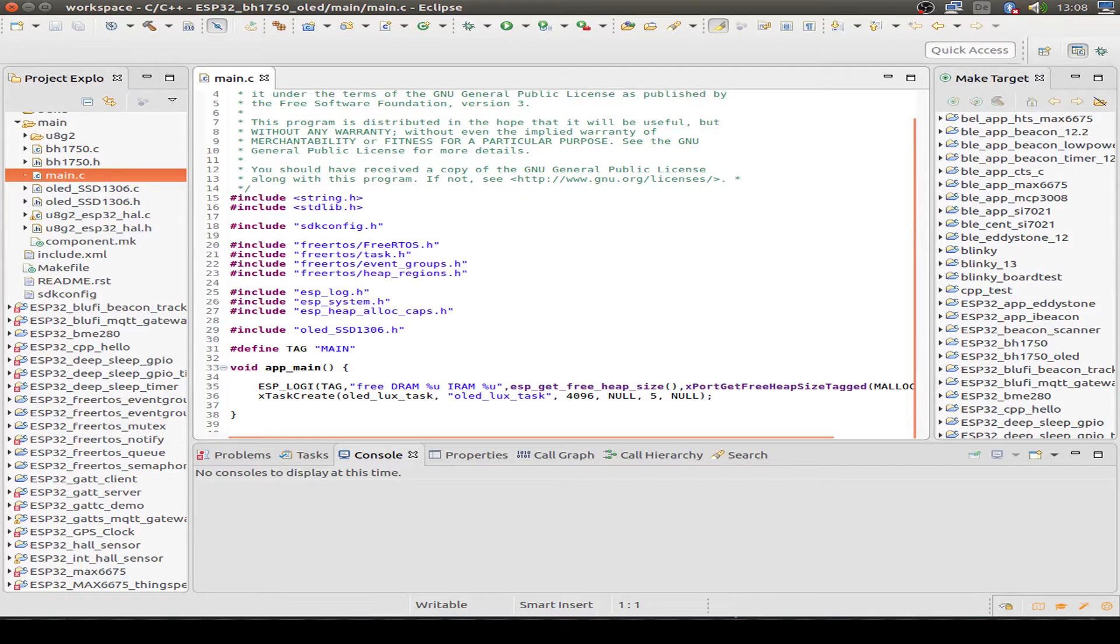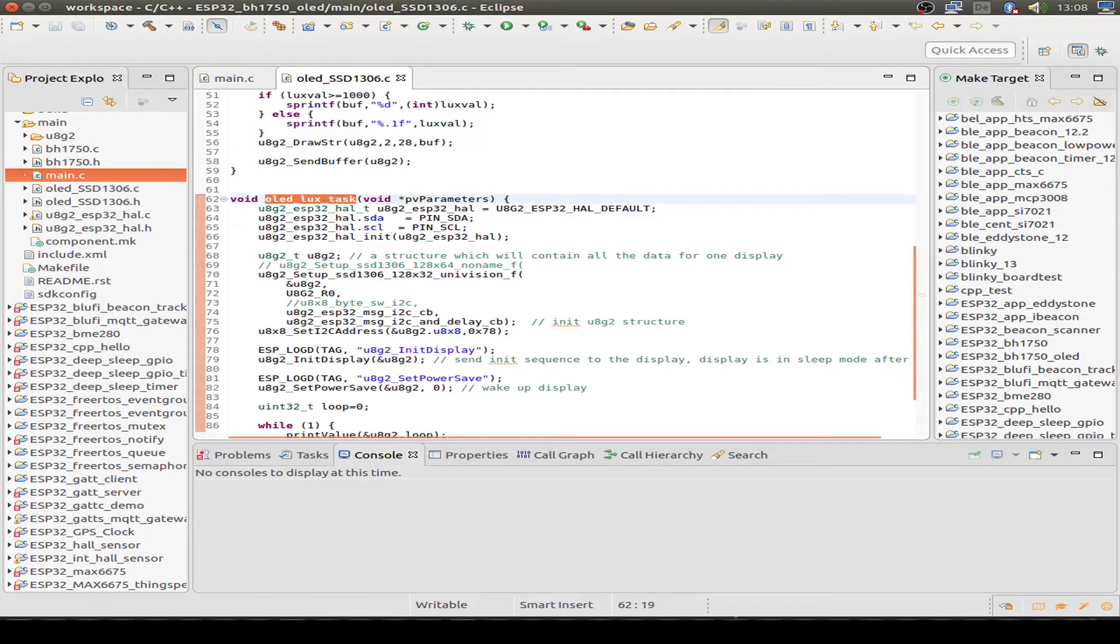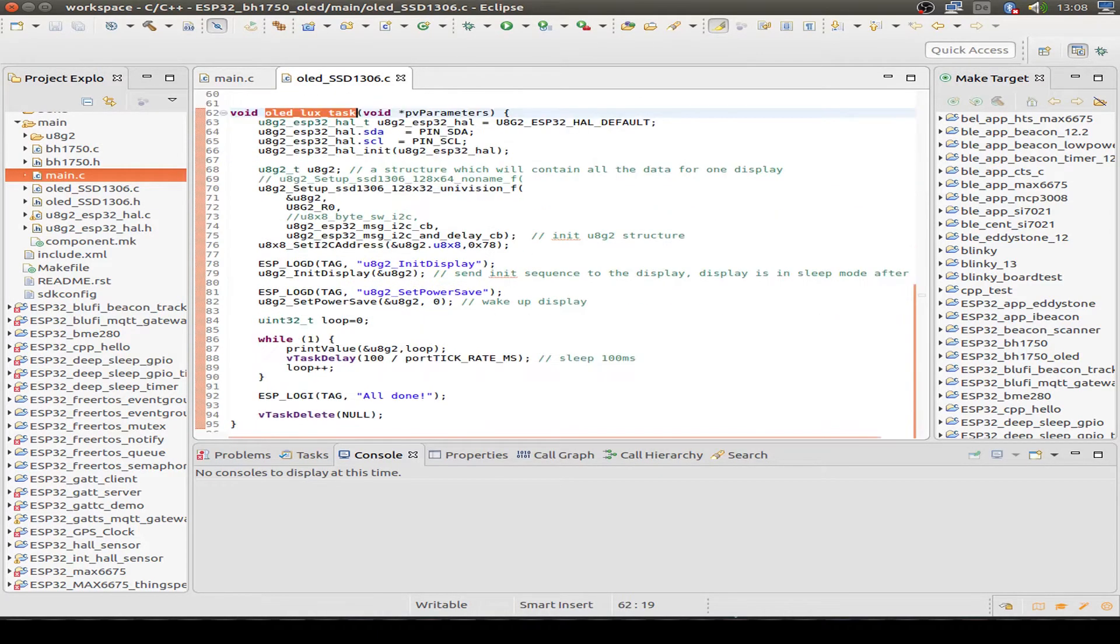And this is the code. This is our main routine. We just start one task, the OLED task, and then everything happens here. So we initialize the U8GLib from Olli Krauss and our display. Then we go to an endless loop and just print our measurement values.